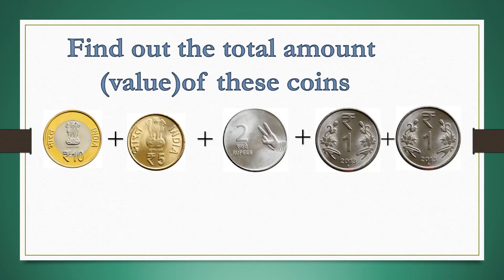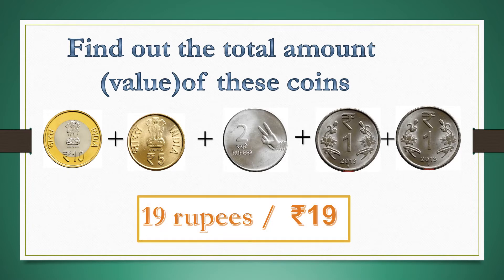In this example, different coins are given: 10 rupees, 5 rupees, 2 rupees, and two 1 rupee coins. Let us add: 10 plus 5 is 15; 15 plus 2 is 17; 17 plus 1 is 18; 18 plus 1 is 19. The total value is 19 rupees.